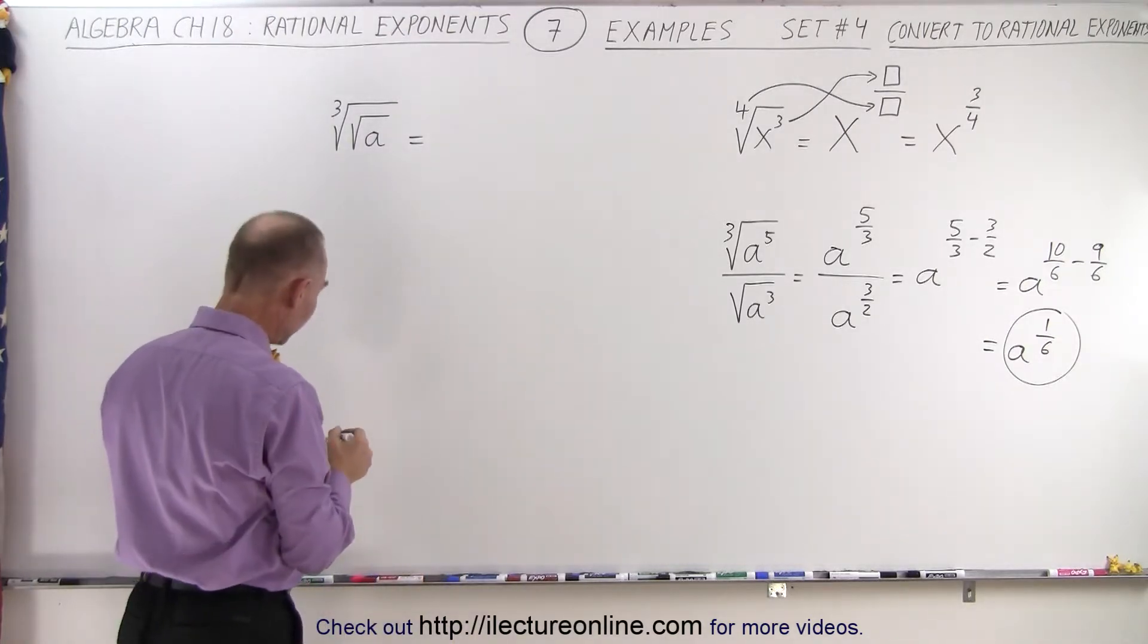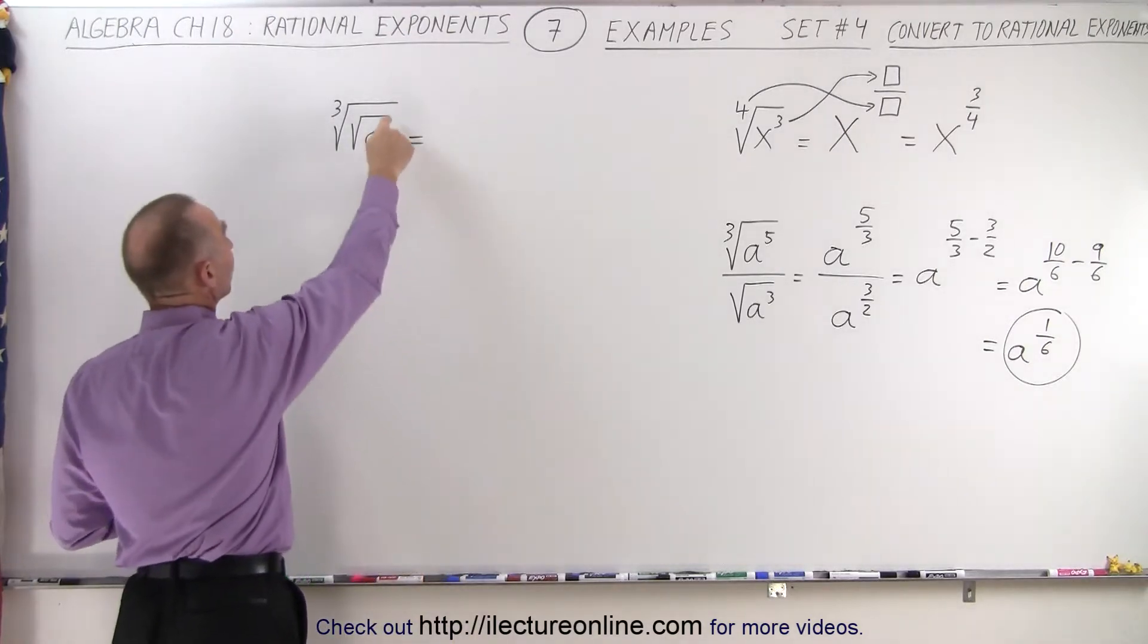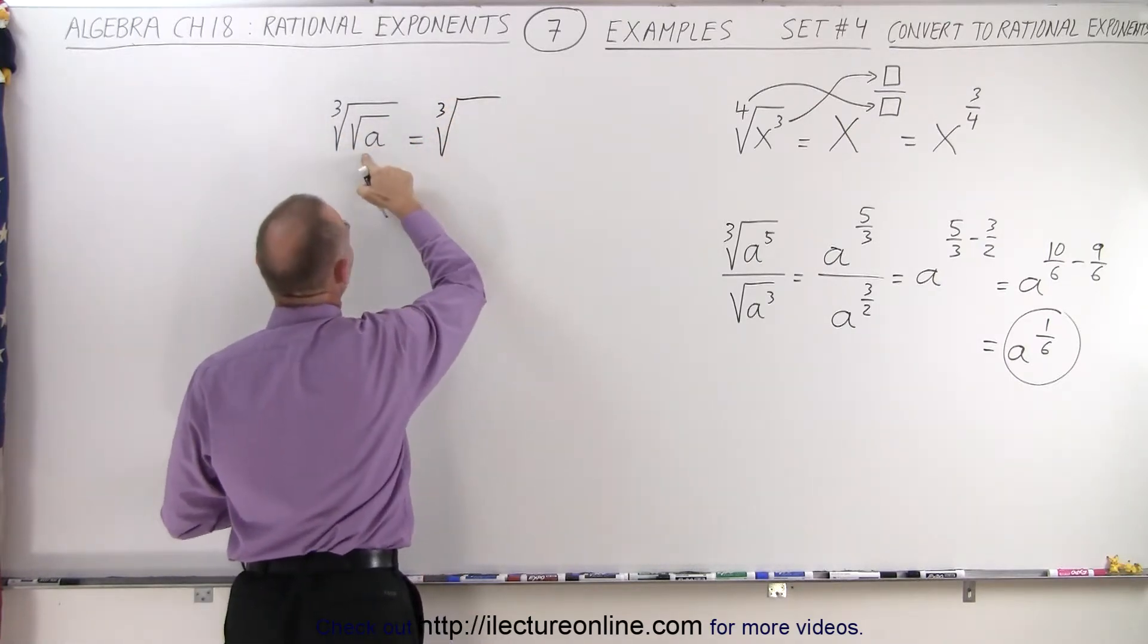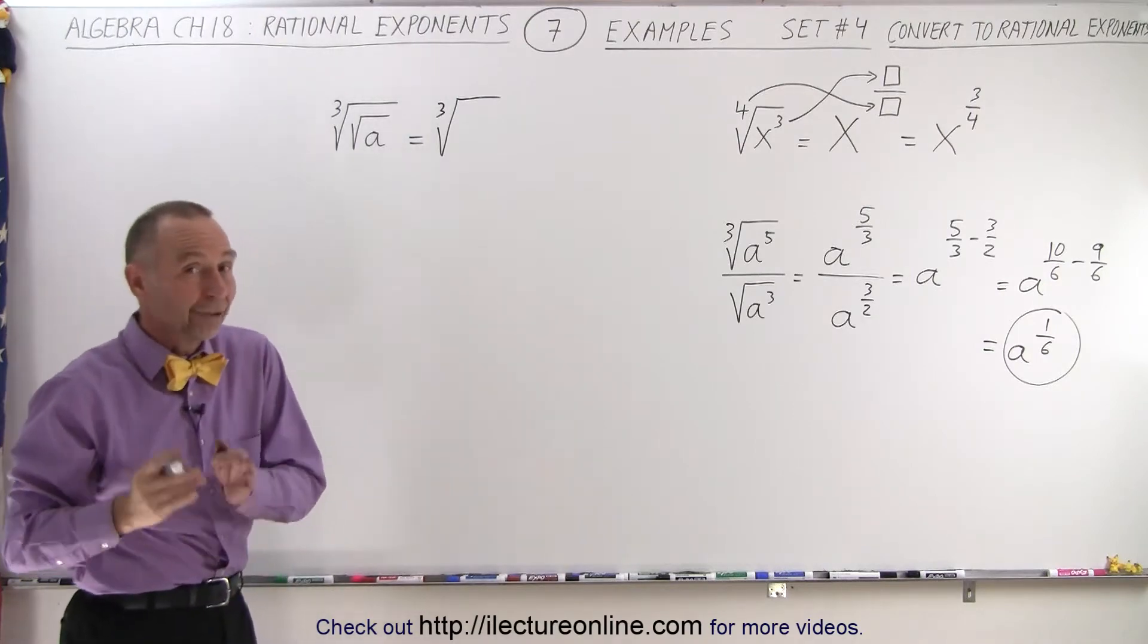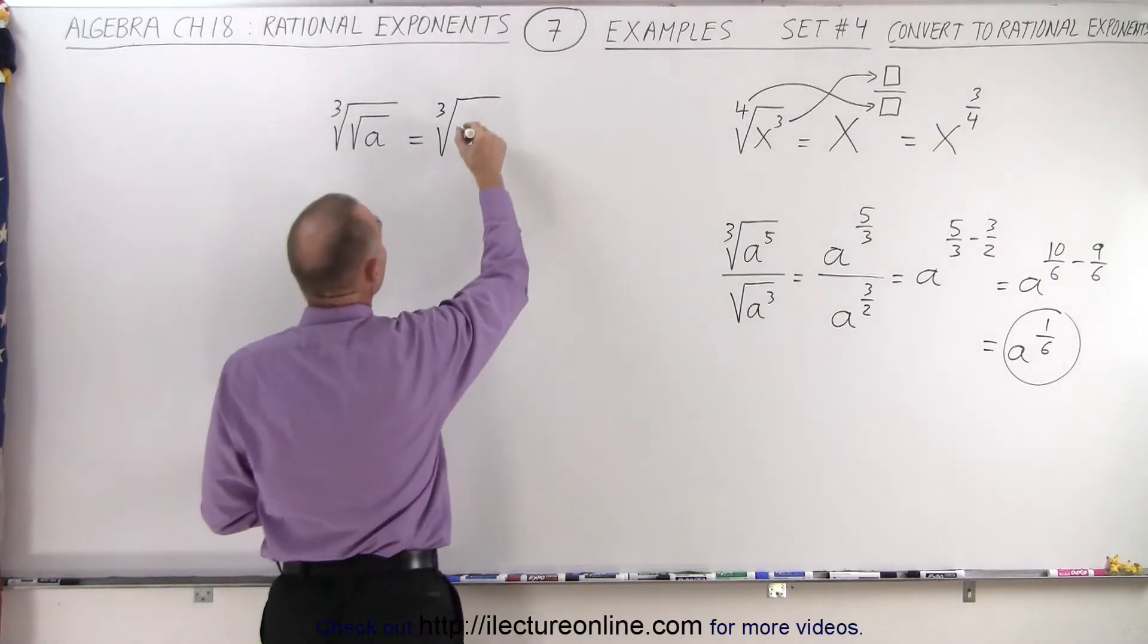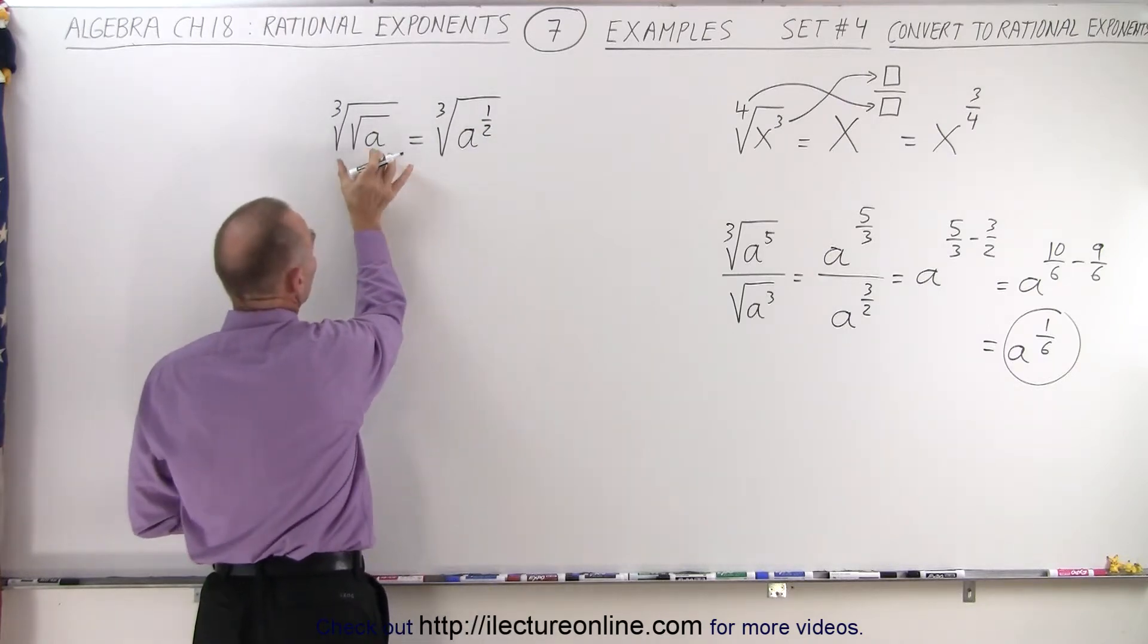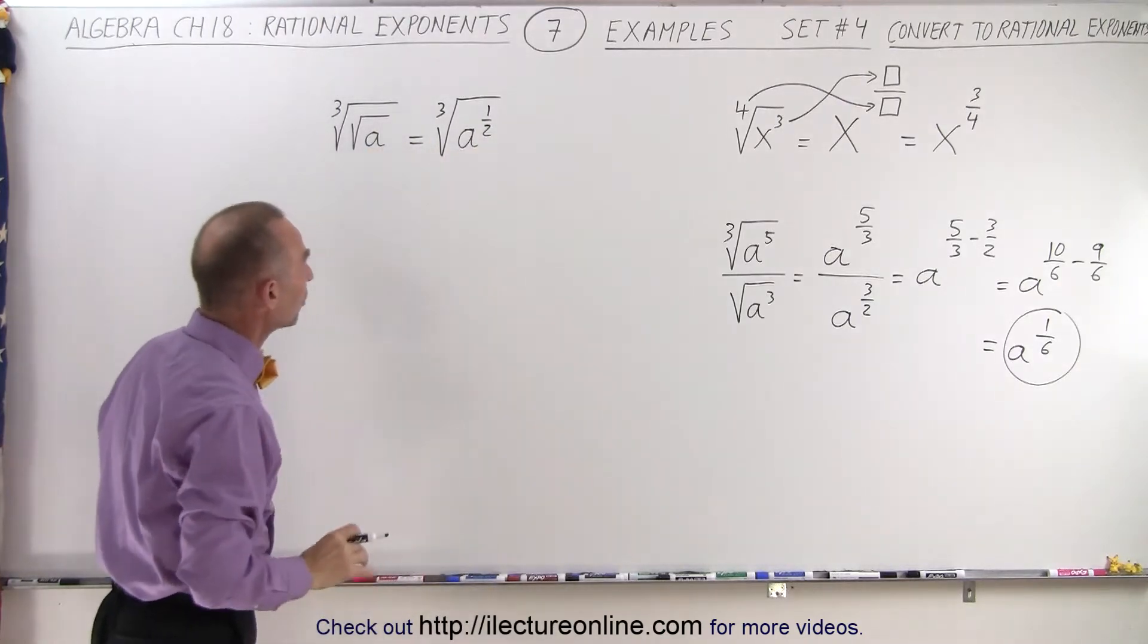Let's come over here. Now that looks kind of odd. So what we're going to do is first take care of the inside. So this can be written as the cube root of what's inside, which is the square root of a. And the square root of a can be written as a to the 1 half power, because that's a conversion from a square root to a rational exponent.